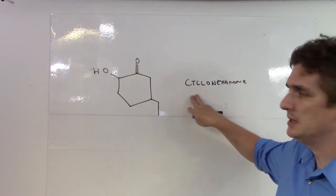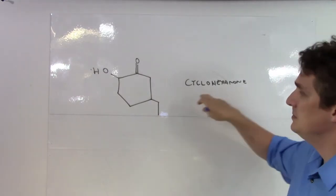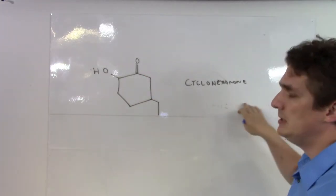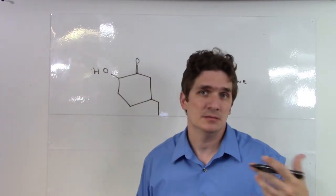So, we've got the cyclo for ring, hexa because there's six, A because it's an alkane, and the O and E to specify that it is, in fact, a ketone.